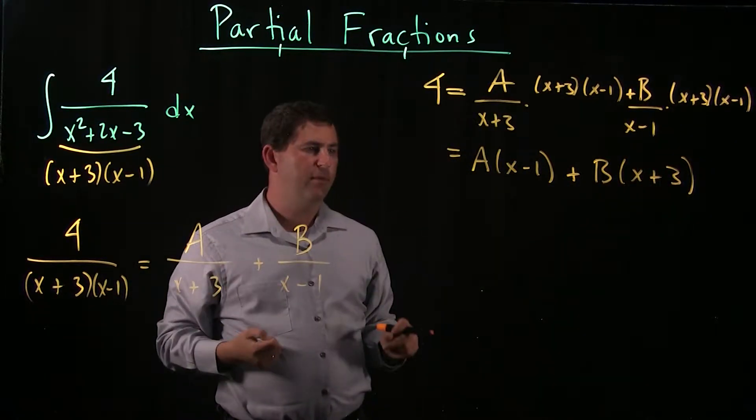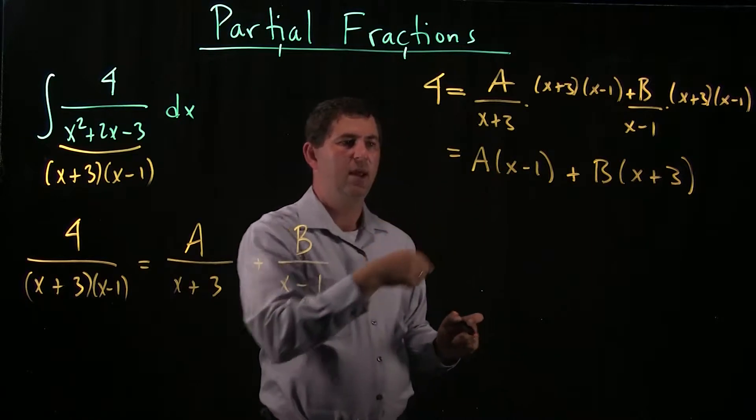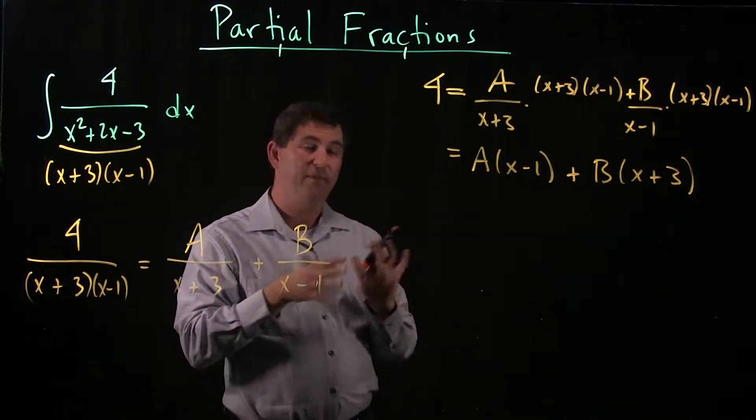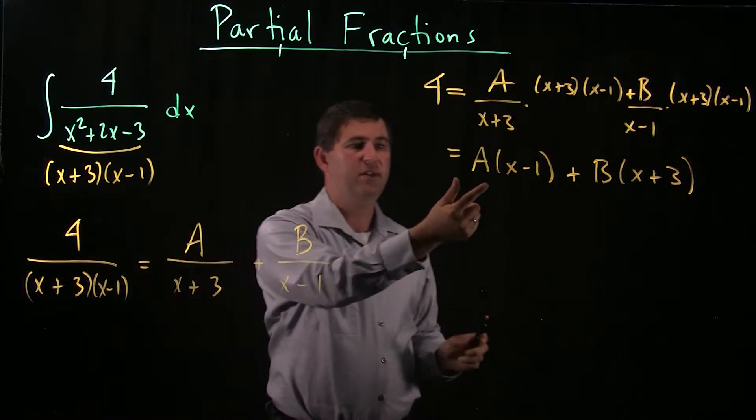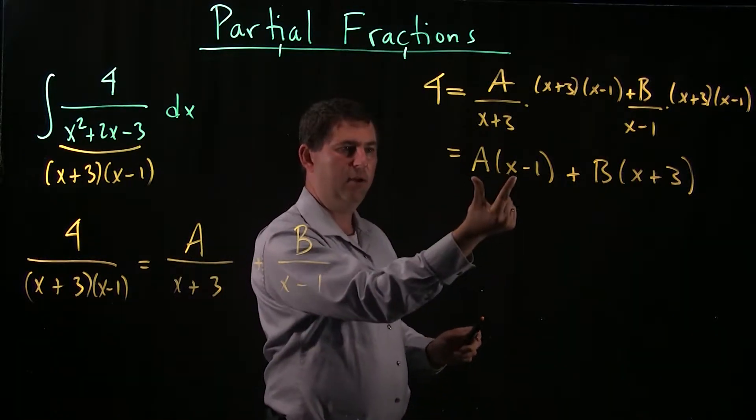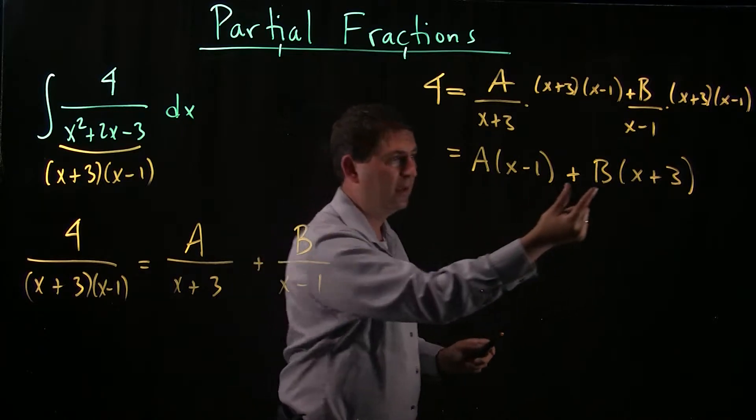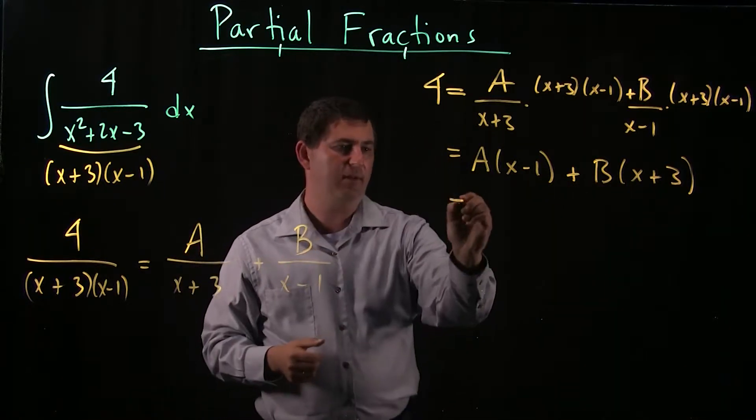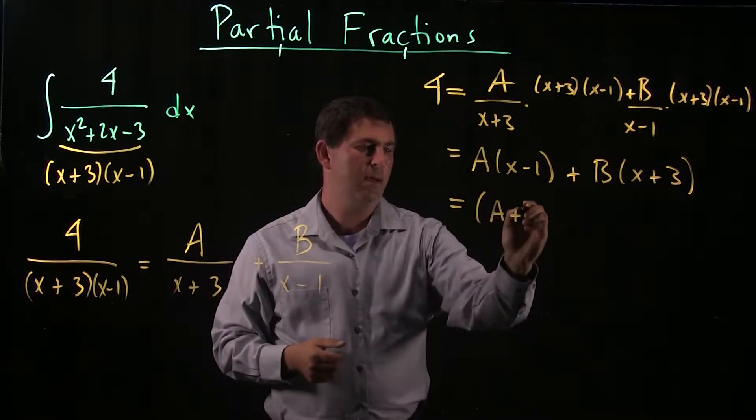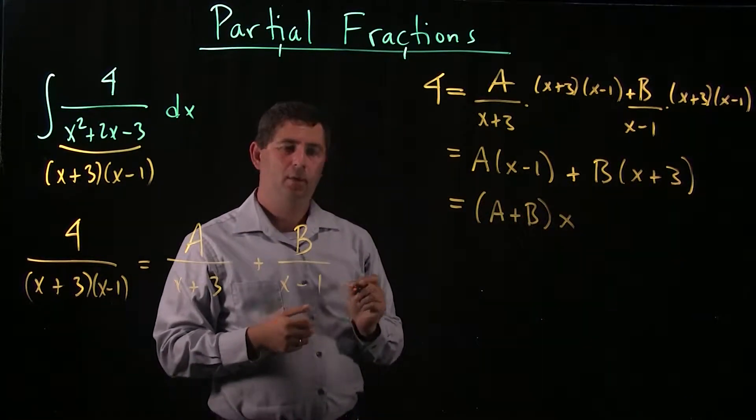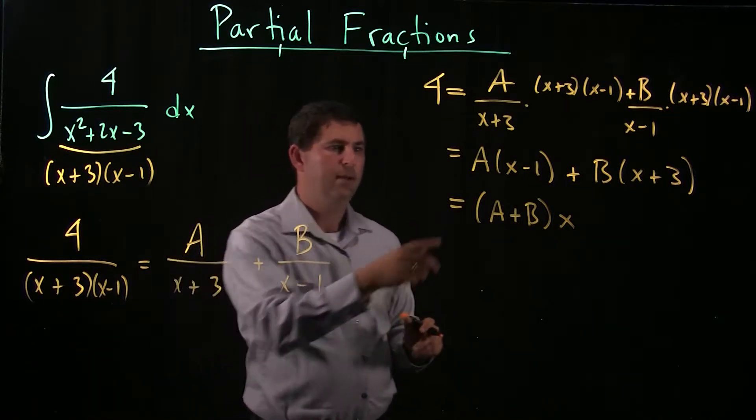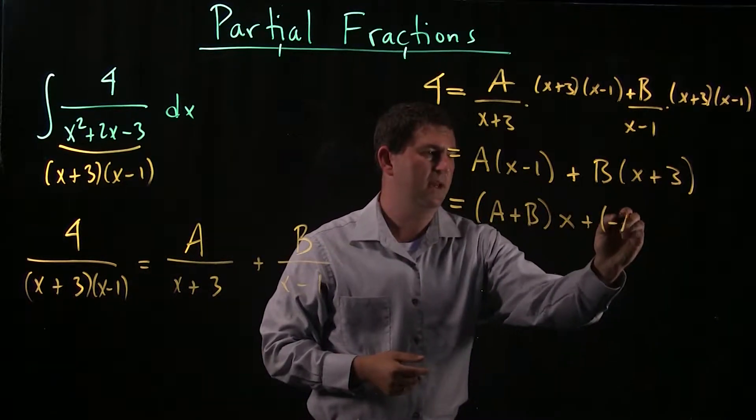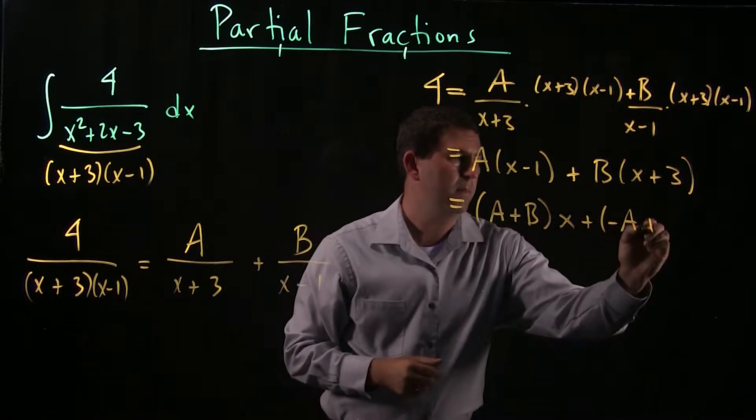Okay, I'm going to go one step further now in distributing these. And I'm going to combine like terms as I go. So let's take a look and see how many x's I'm going to get. So here I get a x's and here I get b x's. So in total, I have a plus b x's. Okay, how many constants do I get? Well, I get a times negative 1. So that's going to be negative a and b times 3 or 3b.